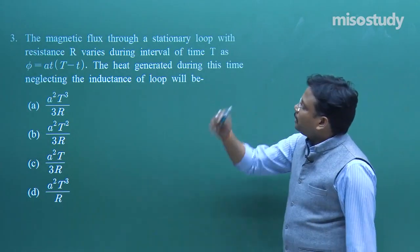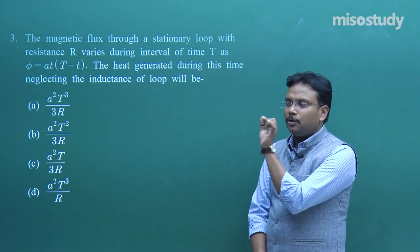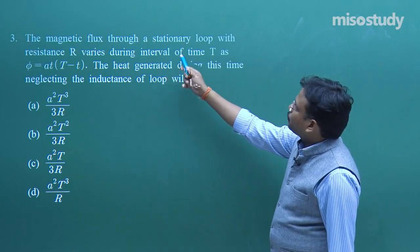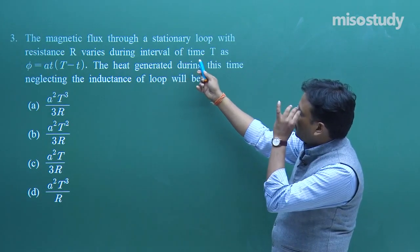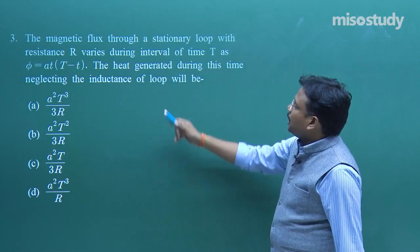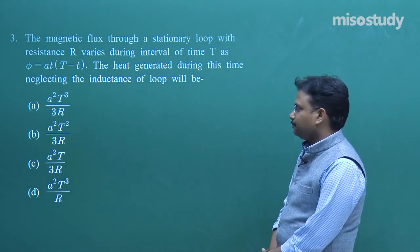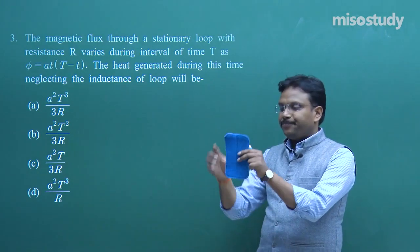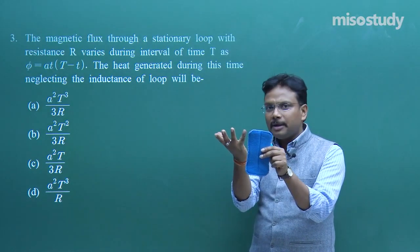The approach here is simple integration — nothing difficult. The magnetic flux through a stationary loop with resistance R varies during a time interval T as φ = AT(T − t). The heat generated during this time, neglecting the inductance of the loop, is what we need to find. When the word 'magnetic flux' comes up, recall φ_B = B·A·cosθ.